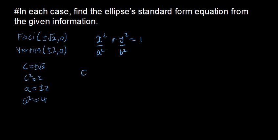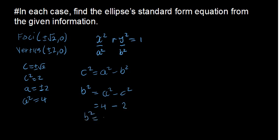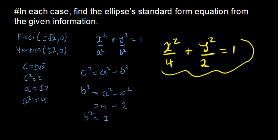I already have a squared, so I just need b squared to complete the standard equation. Making b squared the subject of the formula: b squared equals a squared minus c squared, which is 4 minus 2, giving b squared equals 2. So the standard equation of this ellipse is x squared divided by 4 plus y squared divided by 2 equals 1.